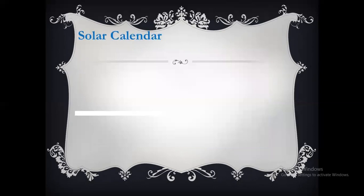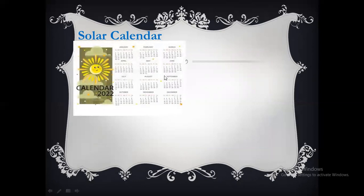Today we are going to discuss two types of calendars. Although there are many types of calendars in the world, we are going to discuss two types. Number one is the solar calendar, in which there are 12 months from January to December: January, February, March, April, May, June, July, August, September, October, November, and December.